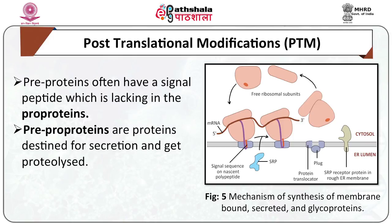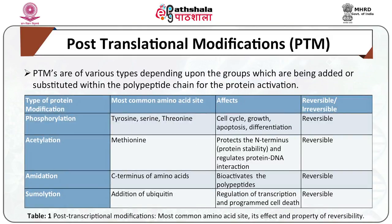The SRP receptor is a heterodimeric unit with alpha and beta subunits. SRP has a translocation channel, called the translocon, through which the emerging polypeptide is extruded into the ER lumen. The signal peptide is cleaved by a serine protease family known as signal peptidase and released into the ER lumen. Pre-proteins often have a signal peptide which is lacking in the pro-protein; some proteins destined for secretion are further proteolyzed and are termed pre-pro-proteins. PTMs are of various types depending on the groups added to or substituted within the polypeptide chain.